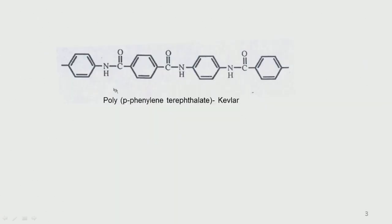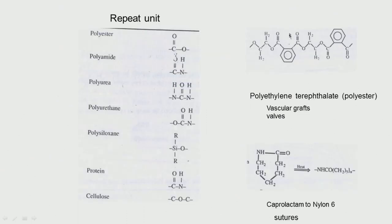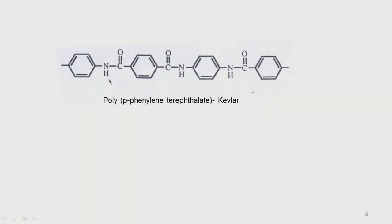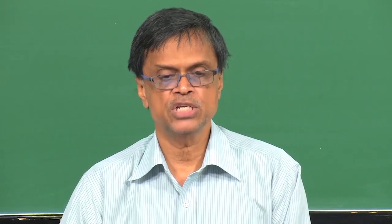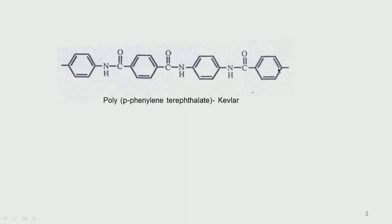This polymer is called polyparaphenylene terephthalate because it has nitrogen NH and paraphenylene groups. It is extremely strong, commercially called Kevlar, and is used to make bulletproof vests. They have very high tensile strength and can be made into fibres, spun to make fabrics. The para group, terephthalate group, and phenylene nitrogen are all present in its structure.